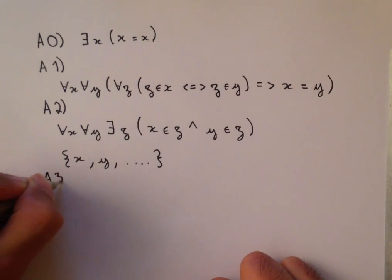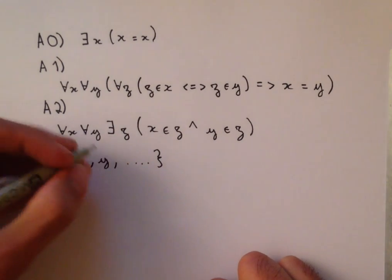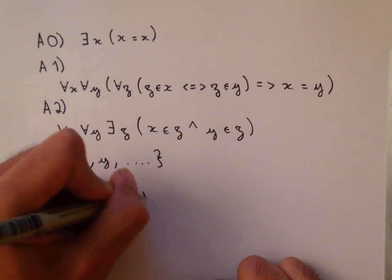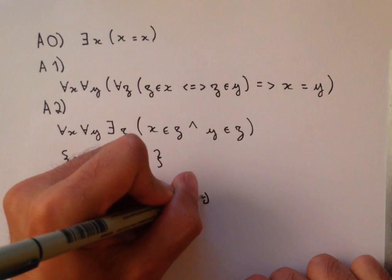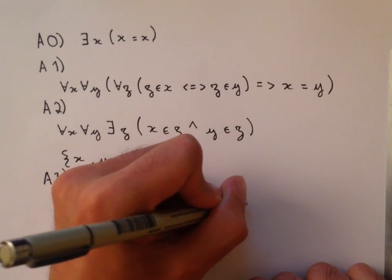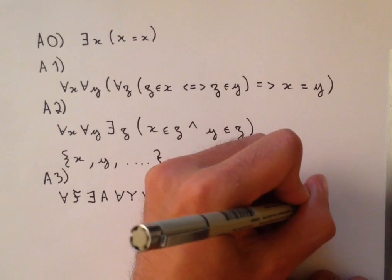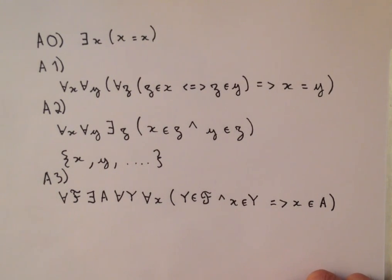The next axiom is the union axiom. For every family of sets f, there exists a set a such that for all big y and for all little x, y is in f and x is in y implies that x is in a. So here, this kind of curliness on this f is just to emphasize the fact that f is a set of sets and that we're going to do stuff with those individual sets that comprise f.